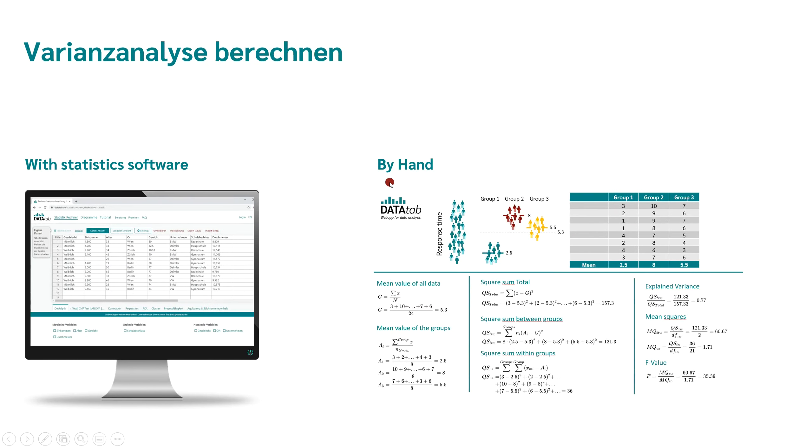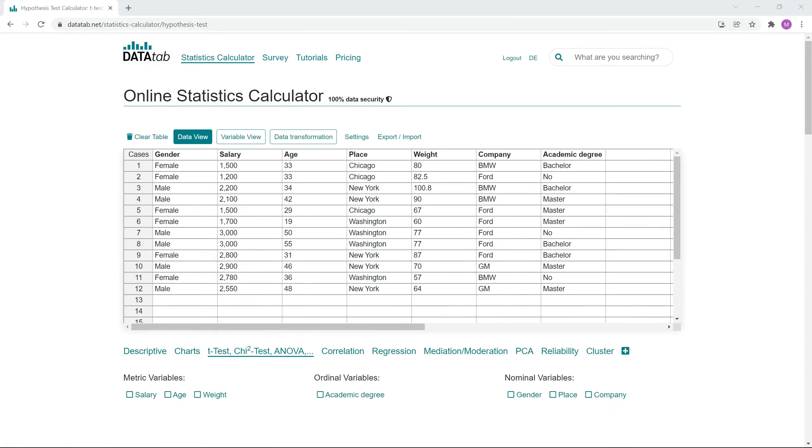How can we calculate an ANOVA? There are two possibilities for the calculation. Either you use a statistics software like DataTap or you calculate the analysis of variance by hand. Admittedly, no one will calculate the analysis of variance by hand, but the knowledge is very helpful to understand more precisely how an analysis of variance works. In this video, I show you how you can easily calculate an analysis of variance online with DataTap.